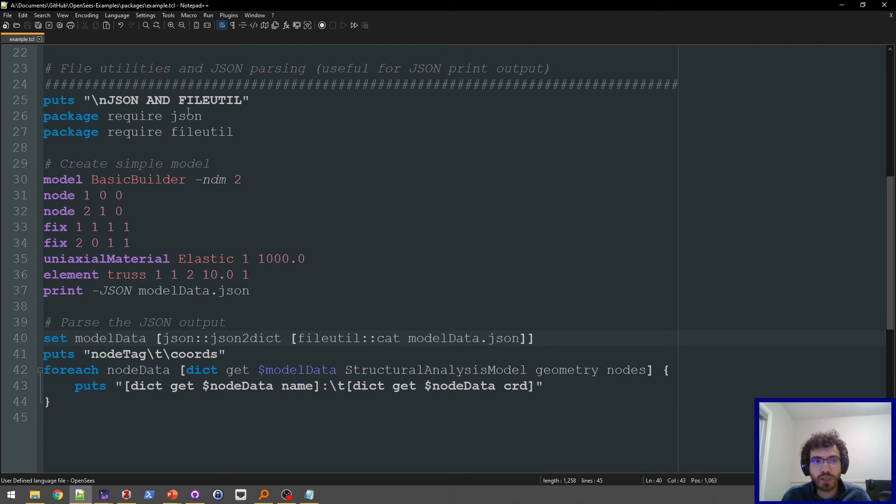And then there's also the JSON package. The JSON package allows you to parse JSON or JavaScript Object Notation to dictionary. The useful thing about that for OpenSees is that the print command has a JSON option. So you can actually print all of the model information to a JSON file, then read it and convert it to dictionary. And then you can query different things within the model. I have that demonstration right here.